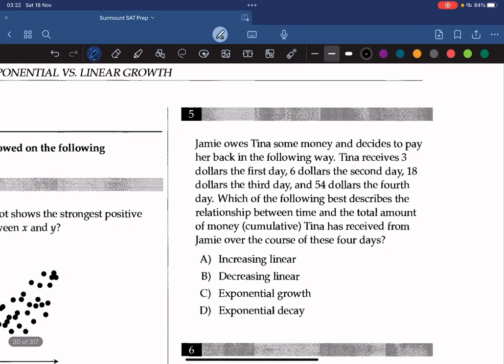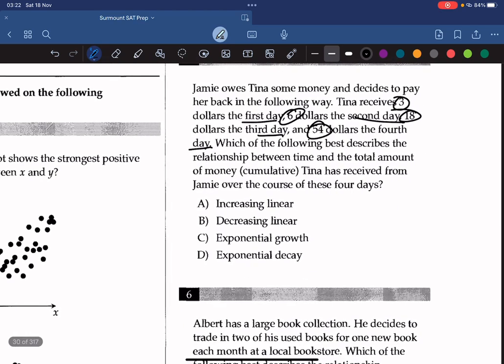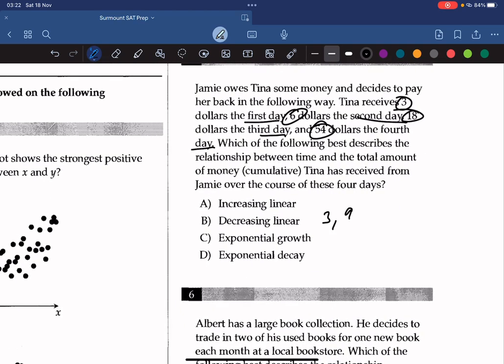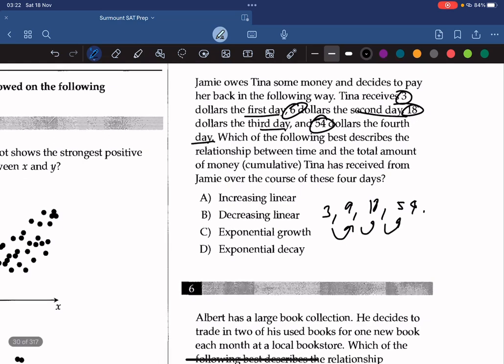Alright. Question 5. Jamie owes Tina some money and decides to pay her back in the following way. Tina receives $3 the first day, $6 the second, $18 the third day, and $54 the fourth day. Which of the following best describes the relationship between time and the total amount of money cumulative Tina has received from Jamie over the course of these four days? Well, $3, $9, $18, $54. Alright. So what do you guys see here? It's obviously going up exponentially, right? So the answer must be exponential growth.